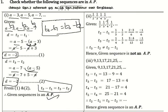For the sequence with terms 1/2, 1/3, 2/3: Term 3 minus Term 2 is (2/3) minus (1/3). Term 2 minus Term 1 is (1/3) minus (1/2). Cross multiplying: 1 into 3 is 3, 1 into 4 is 4 — these are not equal, so the given sequence is not an AP.